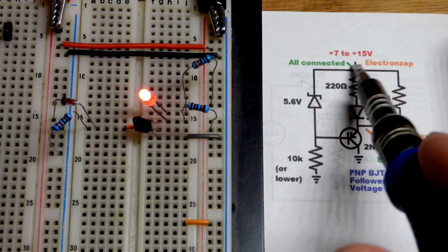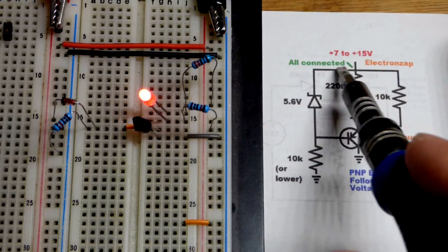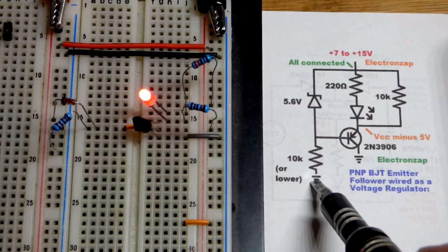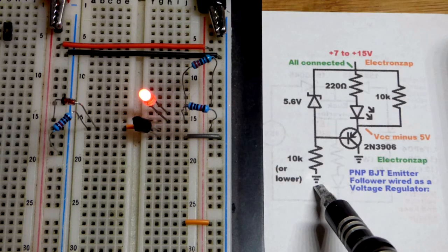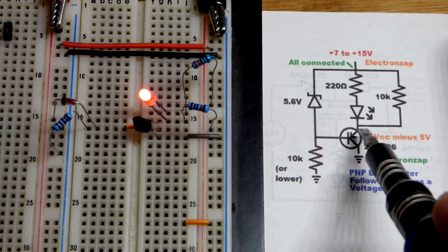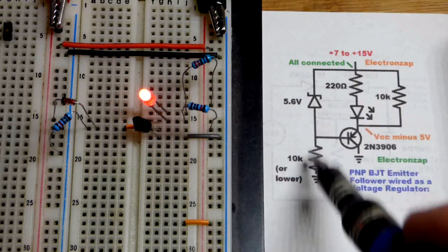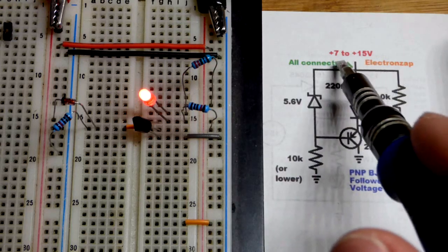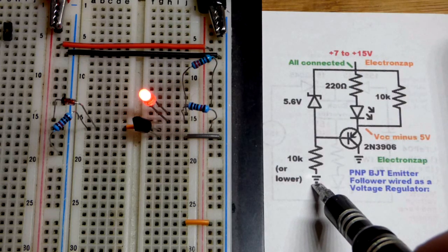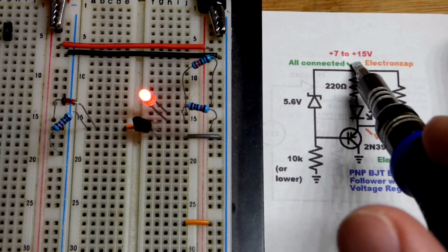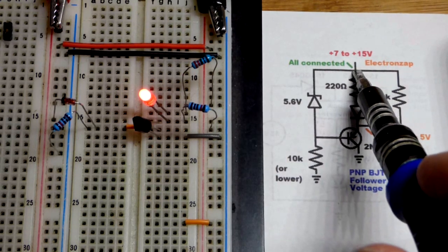Here we could actually consider this to be 0 volts and this could be a negative 7 to 15 volts. But in any case we are just going to keep the standard, the 0 volts negative supply is ground. We're just going to keep that. We got the positive supply there.